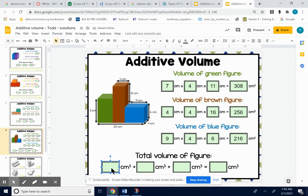So the total volume. I want the total volume. And I know the volume of the green and the volume of the brown and the volume of the blue. Just add all of them up to get the total volume. So I'm going to add 308 plus 256 plus 216. I'm using a calculator. I'll give you a link for a calculator too. 780 cubic centimeters.